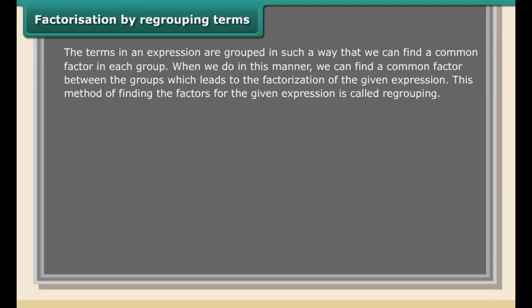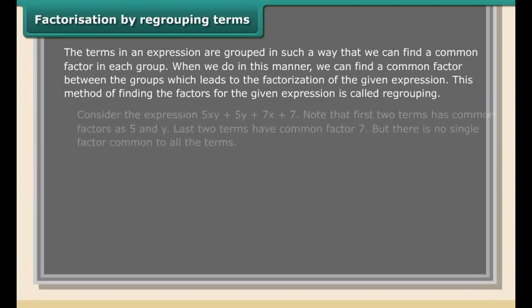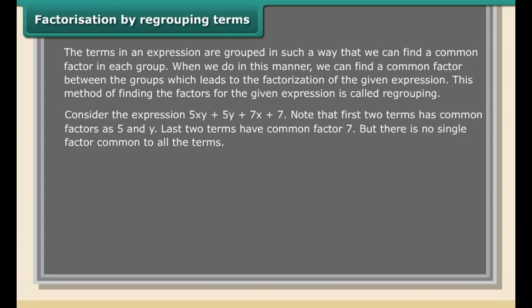Factorization by regrouping terms: the terms in an expression are grouped in such a way that we can find a common factor in each group. We can then find a common factor between the groups, which leads to factorization. Consider the expression 5xy + 5y + 7x + 7. Note that the first two terms have common factors 5 and y, the last two terms have common factor 7, but there is no single factor common to all terms.